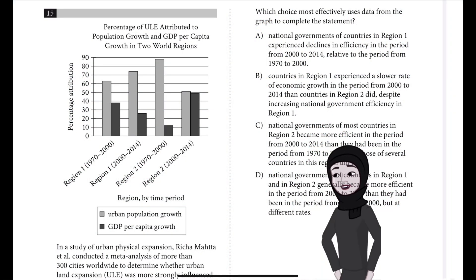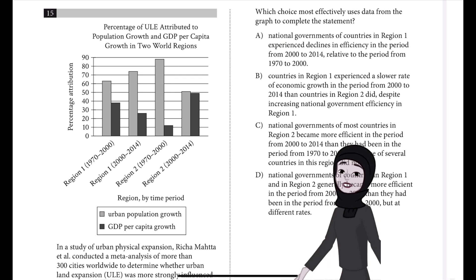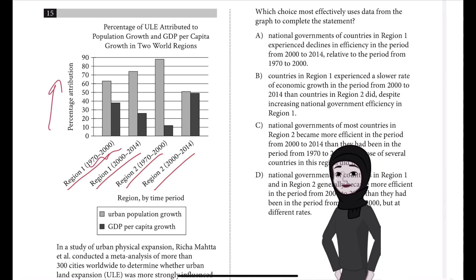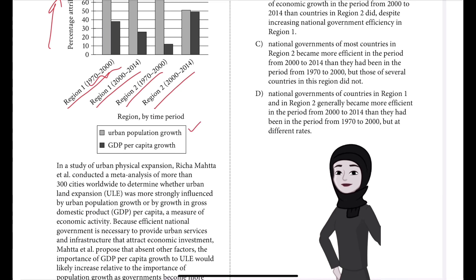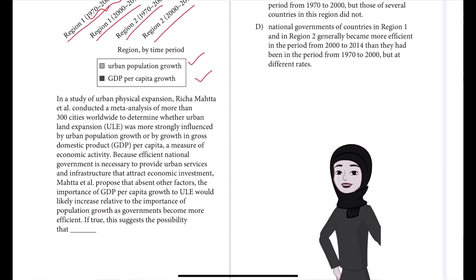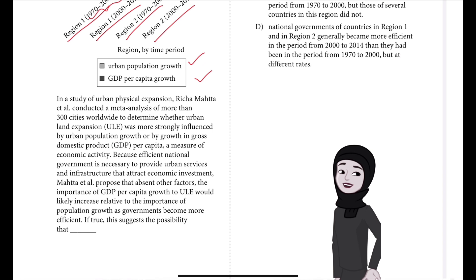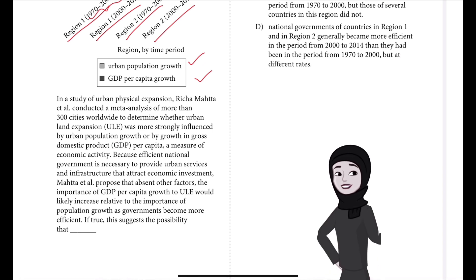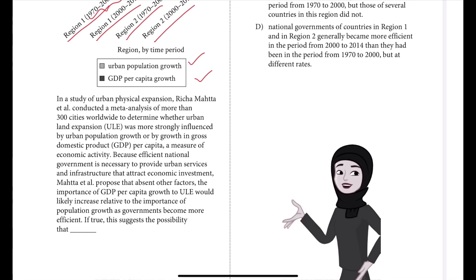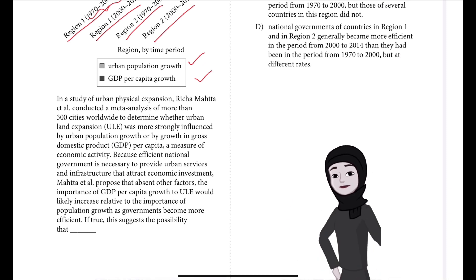Question number 15: percentage of ULE attributed to population growth and GDP per capita growth in two world regions. We have been given a graph where the x-axis has Region 1 and Region 2 at two time periods each, the y-axis has the percentage attribution, light gray is for urban population growth and black stands for GDP per capita growth. In a study of urban physical expansion, Richa Mahata et al. conducted a meta-analysis of more than 300 cities worldwide to determine whether urban land expansion (ULE) was more strongly influenced by urban population growth or by growth in gross domestic product per capita, a measure of economic activity.